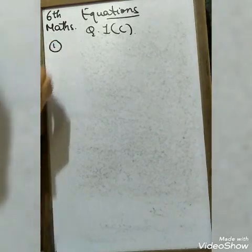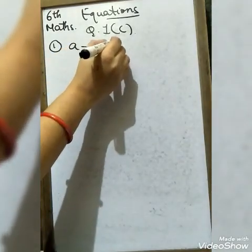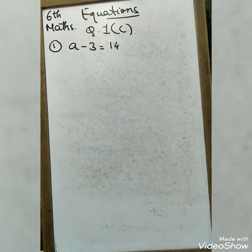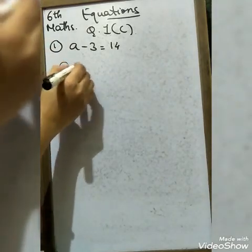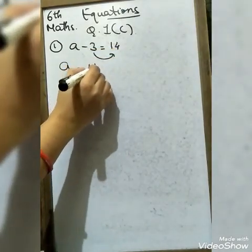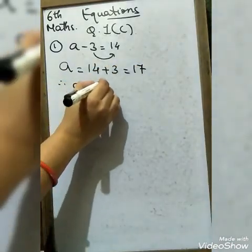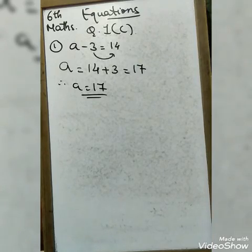The first entry in the table is: a minus 3 equals 14. We need to find the value — if LHS equals RHS it is an equality, otherwise it is an equation. Solving: a = 14 + 3 = 17, therefore a = 17. This is an equation, so we put a tick mark in the equation column and a cross mark in the equality column.